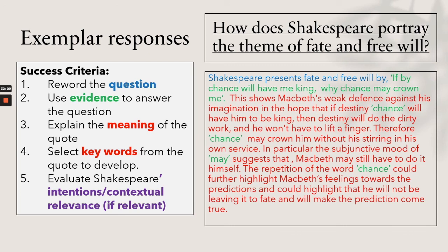'How does Shakespeare portray the theme of fate and free will?' Shakespeare presents fate and free will by: 'If chance will have me king, why, chance may crown me.' This shows Macbeth's weak defense against his imagination — hoping that if destiny will make him king, destiny will do the dirty work. The subjunctive mood of 'may' suggests Macbeth may still have to act himself. The repetition of 'chance' further highlights his feelings toward the prediction and suggests he will not leave it entirely to fate but will make the prediction come true. That's everything — I hope this has helped and I'll see you soon.